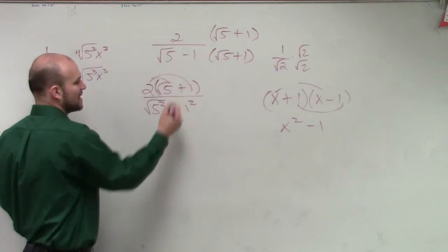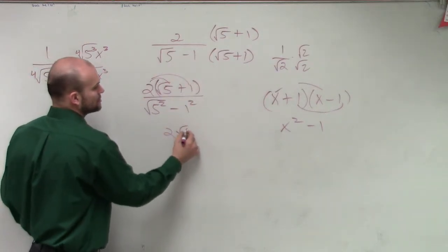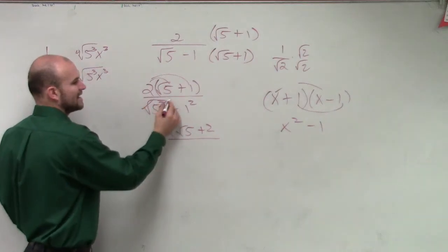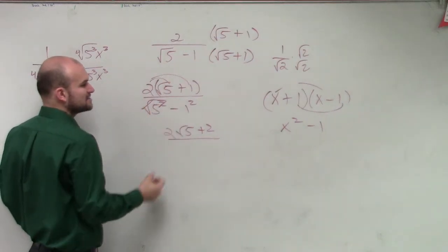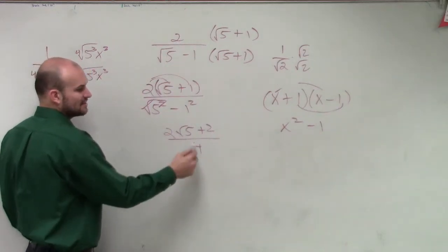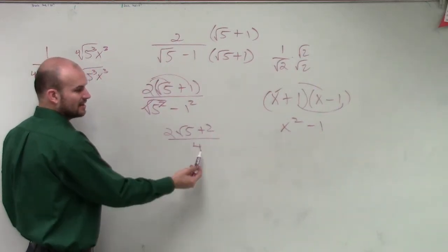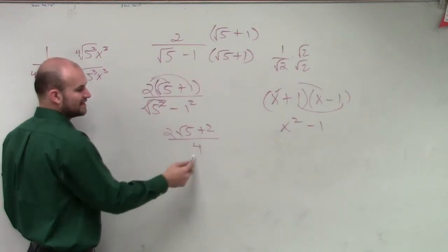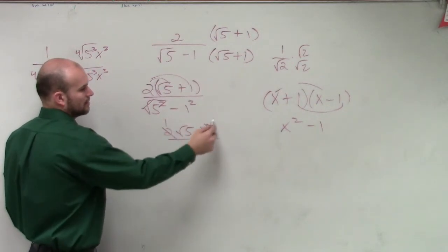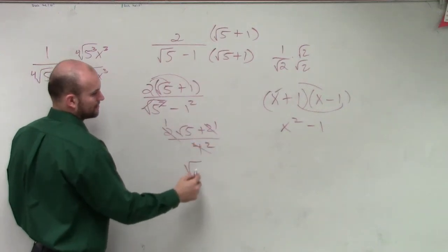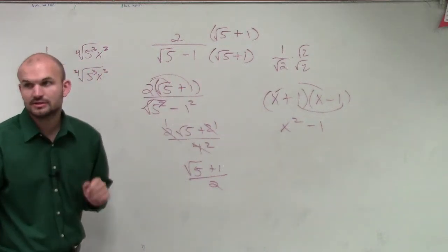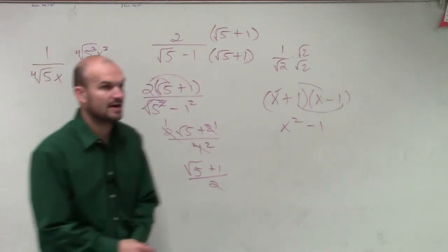So therefore, now I apply the distributive property here. So I get 2 square root of 5 plus 2 divided by, that undoes each other, so I have 5 minus 1, which is going to be 4. Then, to simplify this, I could divide everything by, I could reduce all of these. So that's become a 2. So my final answer is going to be square root of 5 plus 1 divided by 2.